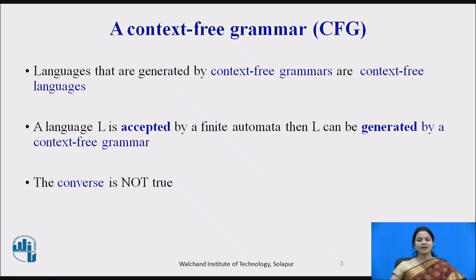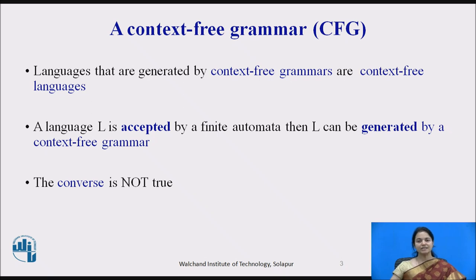Languages generated by Context-Free Grammar are Context-Free Languages. Context-Free Grammars are more expressive than Finite Automata. If a language L is accepted by a Finite Automata, then language L can be generated by Context-Free Grammar. But the converse is not true.